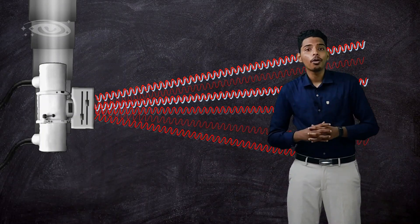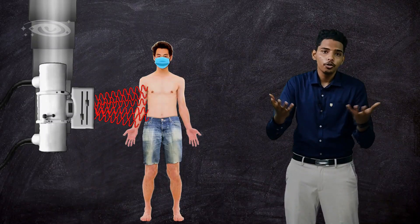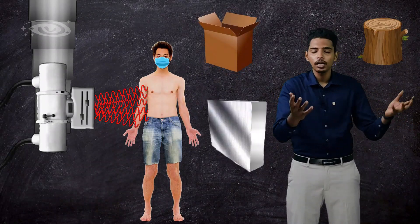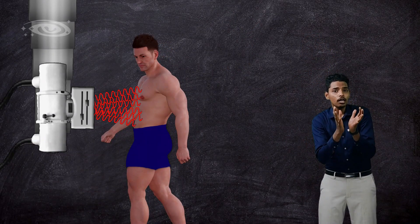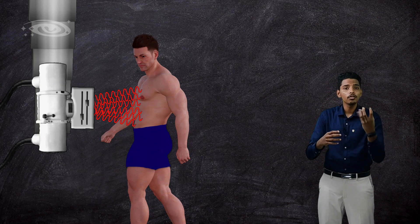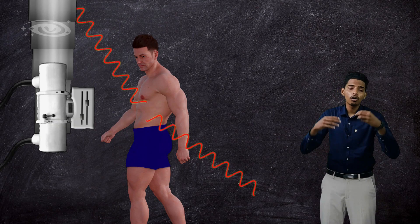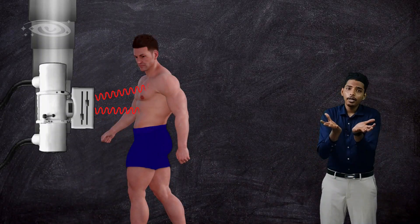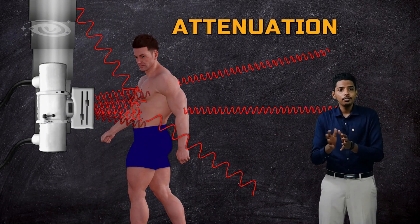When this polychromatic beam interacts with matter — which may be a human body, object, or metal — attenuation occurs. Attenuation means that when X-rays interact with matter, some energy may be scattered, some may be absorbed, or some may penetrate without any interaction. We call this overall process attenuation.